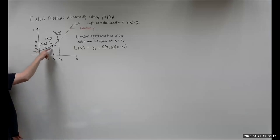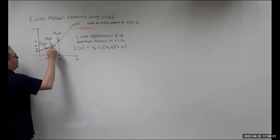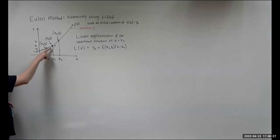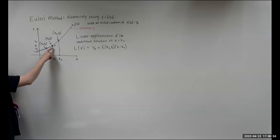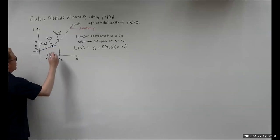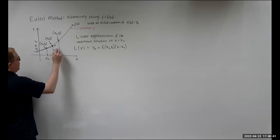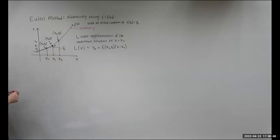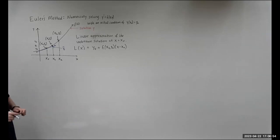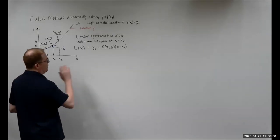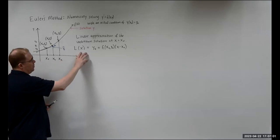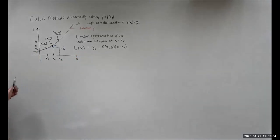By drawing that tangent line, we can use it to give us a point which we'll call y₁ tilde — so y₁ tilde approximates y₁. The concept behind this is using a linearization, or linear approximation technique. We want to linearize at x₀.